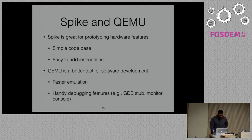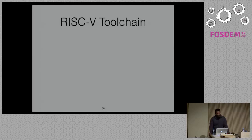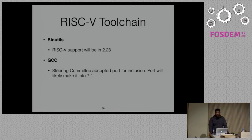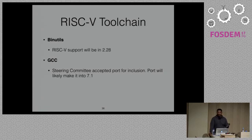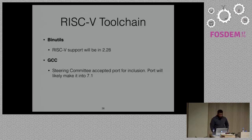With respect to the RISC-V tool chain, there's been a lot of progress. RISC-V support will be in binutils 2.28, and the GCC steering committee has accepted the RISC-V port for inclusion — it will likely make it into GCC 7.1. This is due to hard work by Andrew Waterman and Palmer Daubelt, and thanks to all the GCC maintainers and reviewers. Now that we have the tool chain stuff, I think Linux distros and software enablement will sort of just fall out — the lack of an upstream tool chain was really slowing down some of the software efforts.